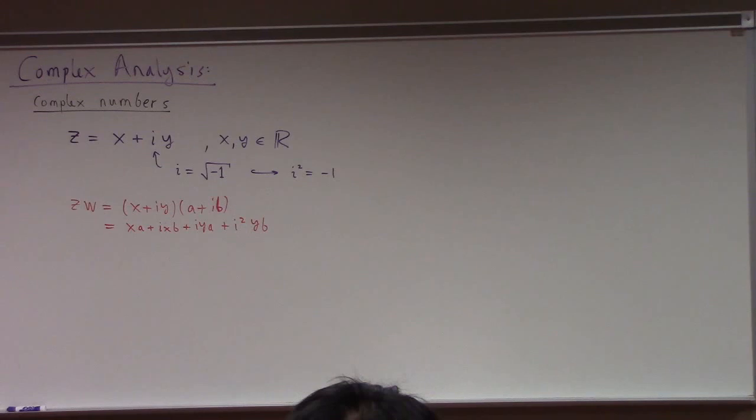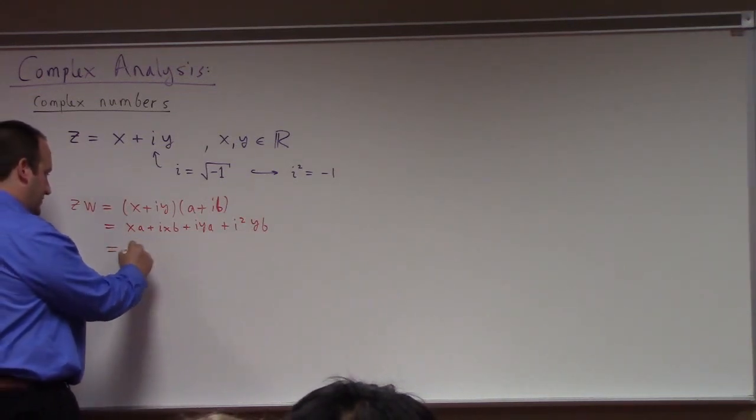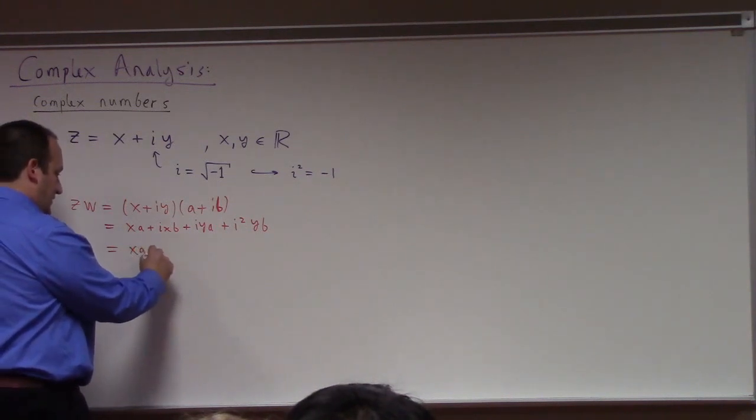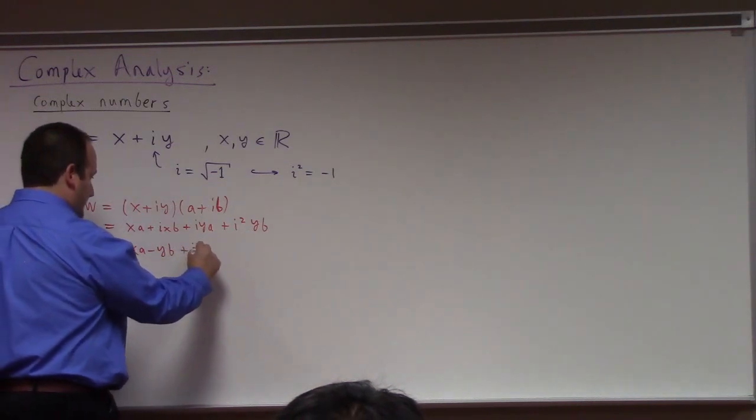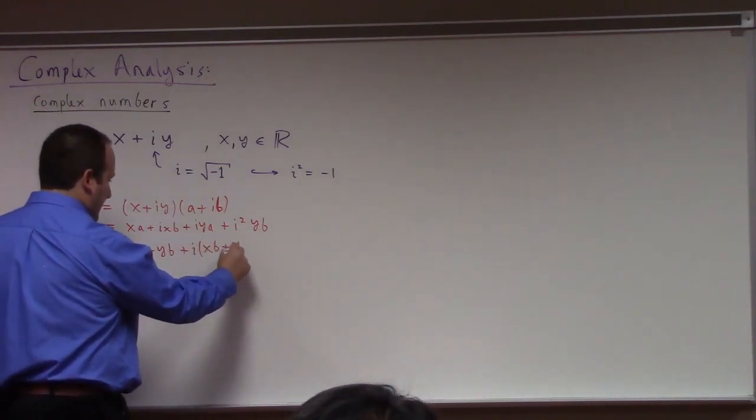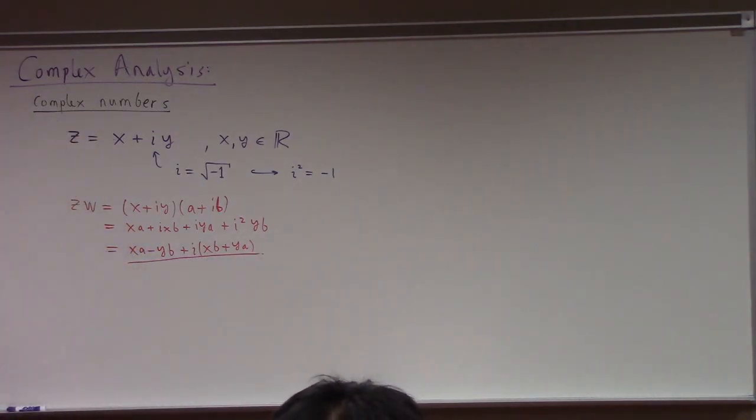Now, we can regroup this, right? We can put the so-called real and imaginary parts separately. So here's xA. And so i squared minus 1 for xA minus yb plus i times xb plus ya. But I can summarize what I'm saying really simply, which is that we multiply complex numbers just like usual, right? Usual distributivity works. The one new wrinkle is that i squared is equal to minus 1, right?